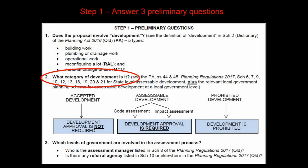The second preliminary question is: what category of development is it? There are three categories under the Act: accepted development, assessable development, and prohibited development. Assessable development has two important subcategories: code assessment and impact assessment. For accepted development, you don't need government approval. For assessable development, you do need government approval. For prohibited development, you can't do it — you can't even apply. The major difference between code and impact assessment is that code assessable development doesn't need to be publicly notified and can't be appealed by a submitter to the Planning and Environment Court, whereas impact assessment must be publicly notified and can be appealed by a submitter.